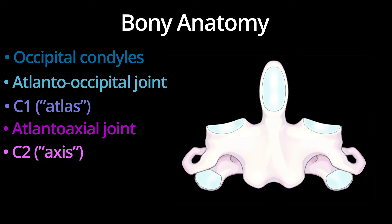C2's most unique feature is the dens, or odontoid process, which is a superiorly directed conical extension of C2. The dens plays an important role in rotation of the head. C2 also has two transverse processes.